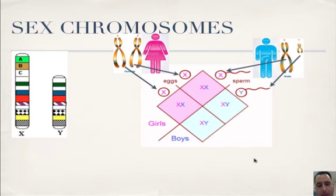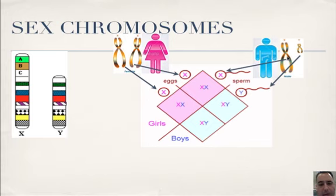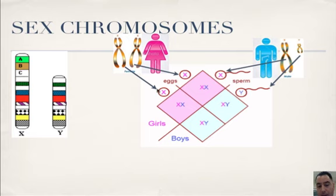Regarding sex chromosomes: females are XX and males are XY. The 23rd pair are your sex chromosomes — they determine your sex. The probability that two parents will have boys or girls is 50-50. Using a Punnett square, it's actually the male that determines the sex of the child. If he puts an X, mom puts an X too, so you get a girl. If dad puts the Y, then you get a boy.